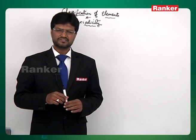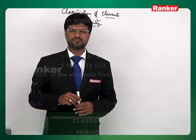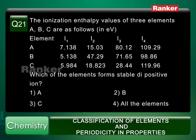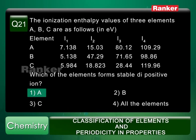Now, the question is: which of the elements forms a stable dipositive ion? The correct answer is element A. A stable dipositive ion is formed by an element which can lose two electrons, and this is an element which is supposed to have two valence electrons. The element with two valence electrons is A, because in this element there is a huge difference between I2 and I3.